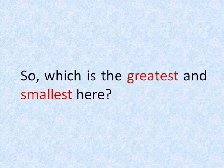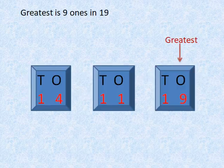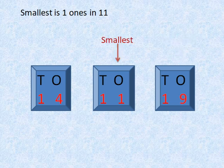So which is the greatest and smallest here? The greatest is 9 ones in 19. Smallest is 1 ones in 11.